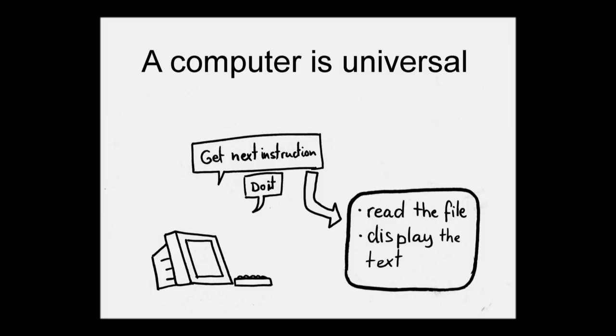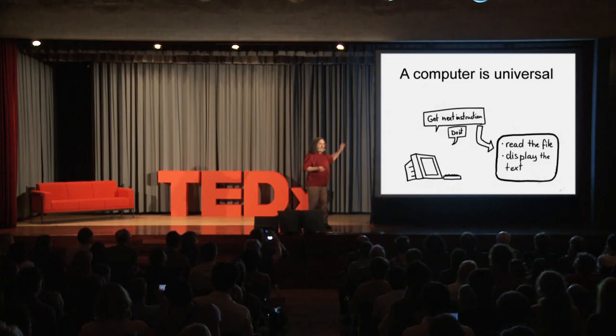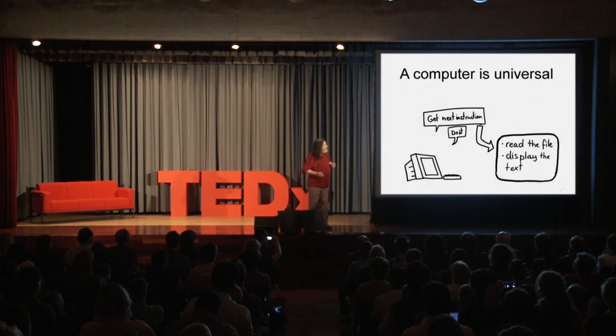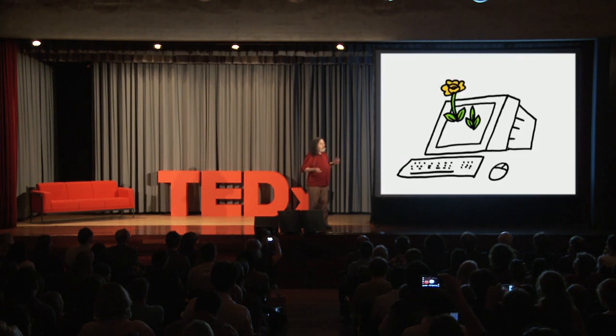What is a computer? A computer is a universal machine. It will do any computation you want it to, because you give it a program that says what the computation is. The computer only knows how to get out an instruction and do it. The program has the instructions — it says what to do. So by writing the right program, you can make it do anything. Well, almost anything.